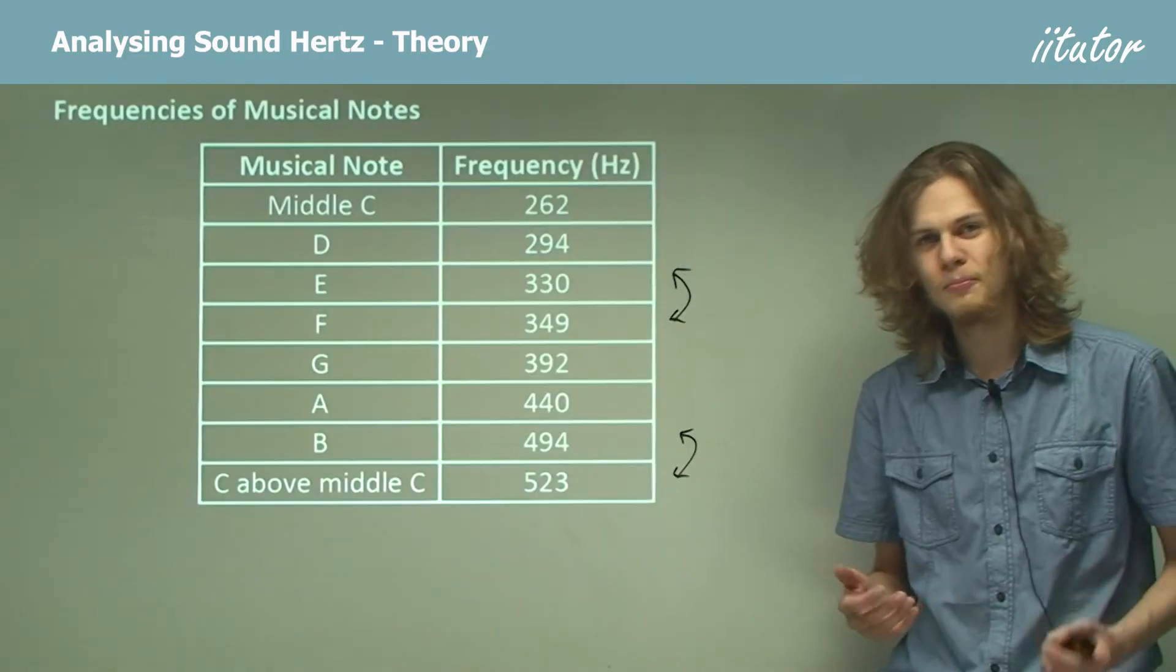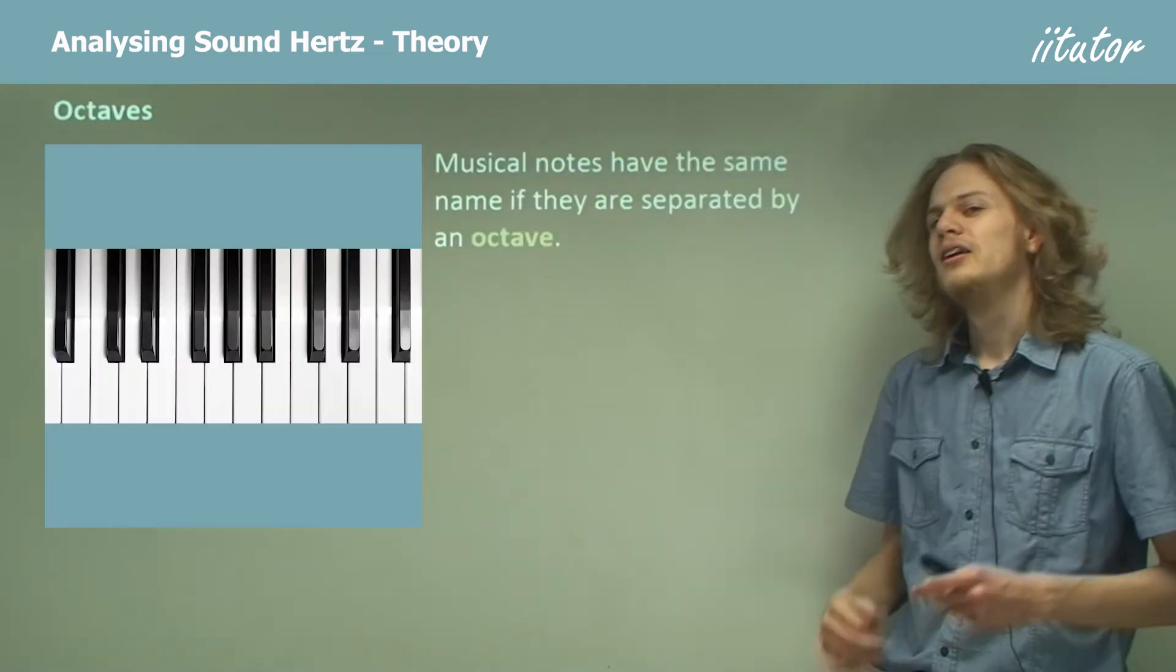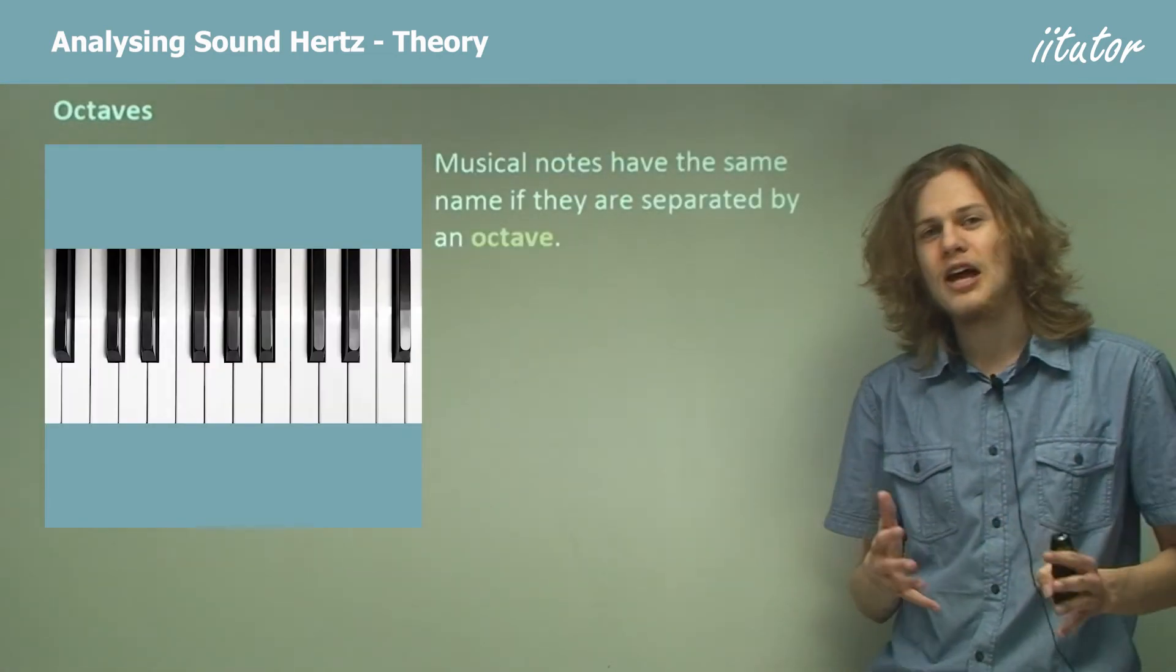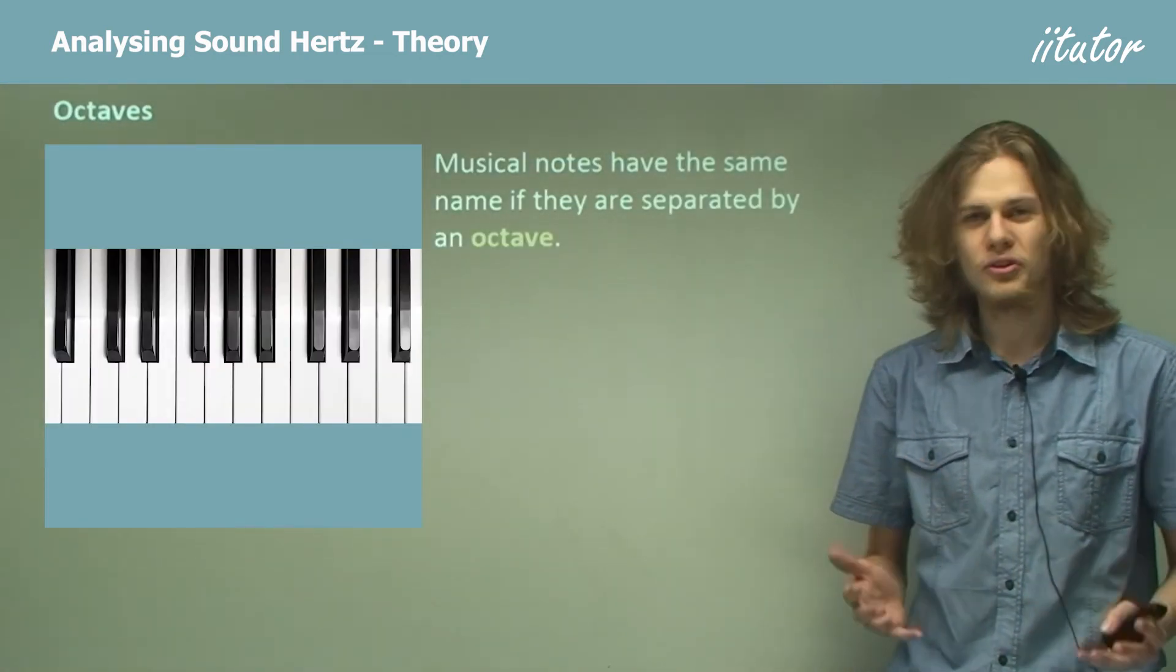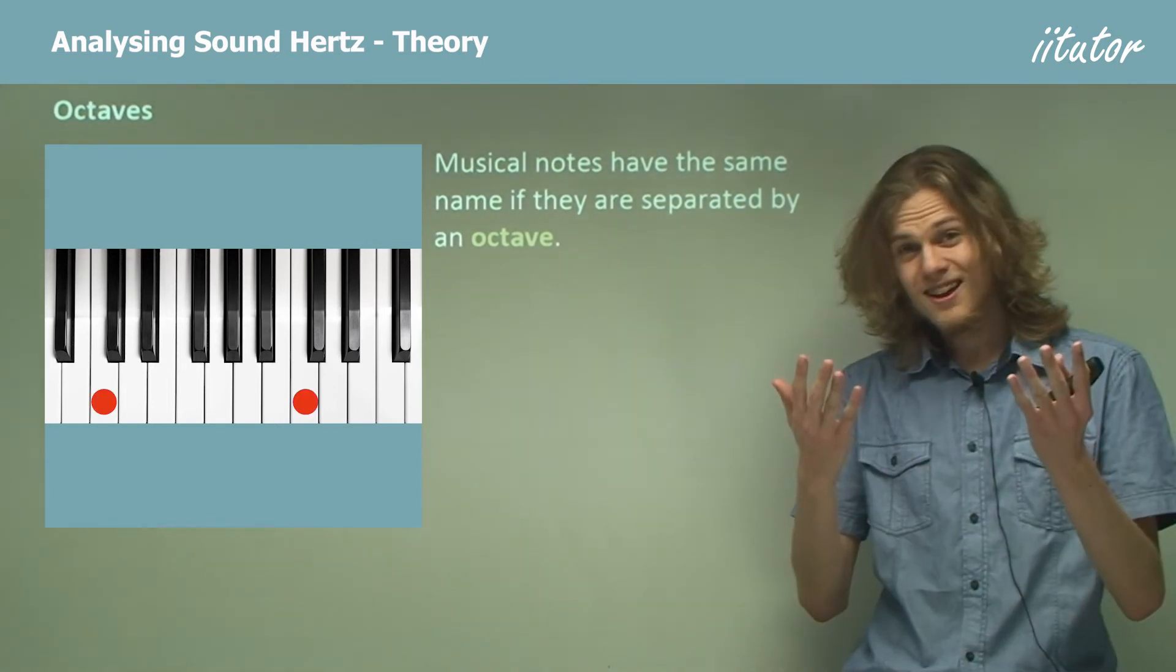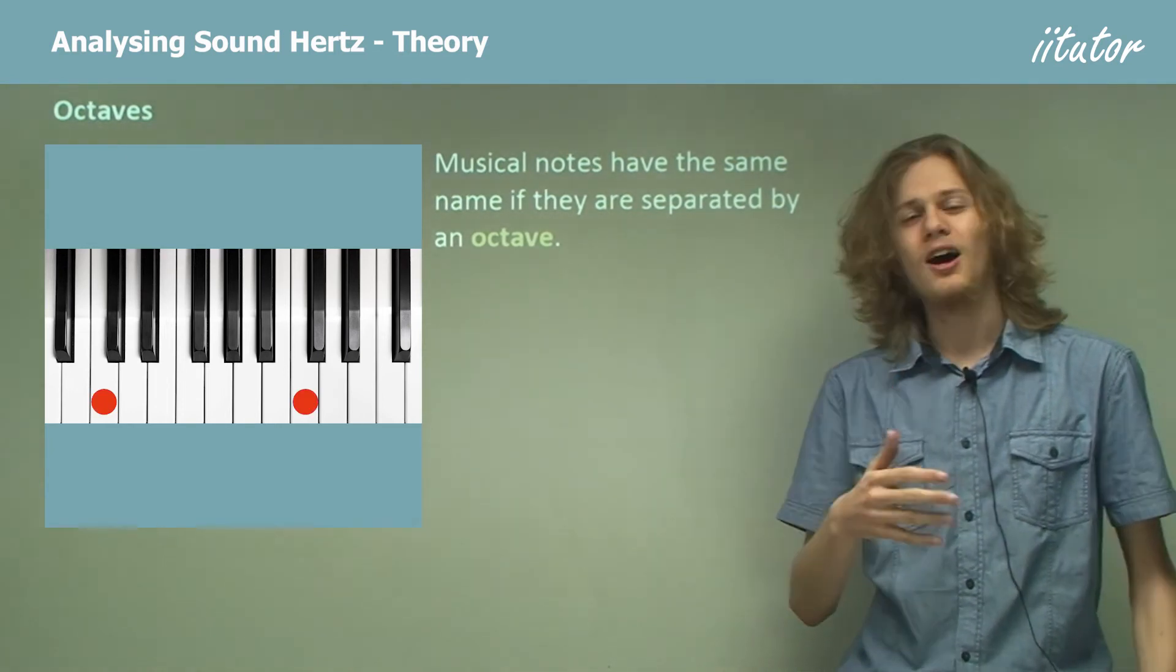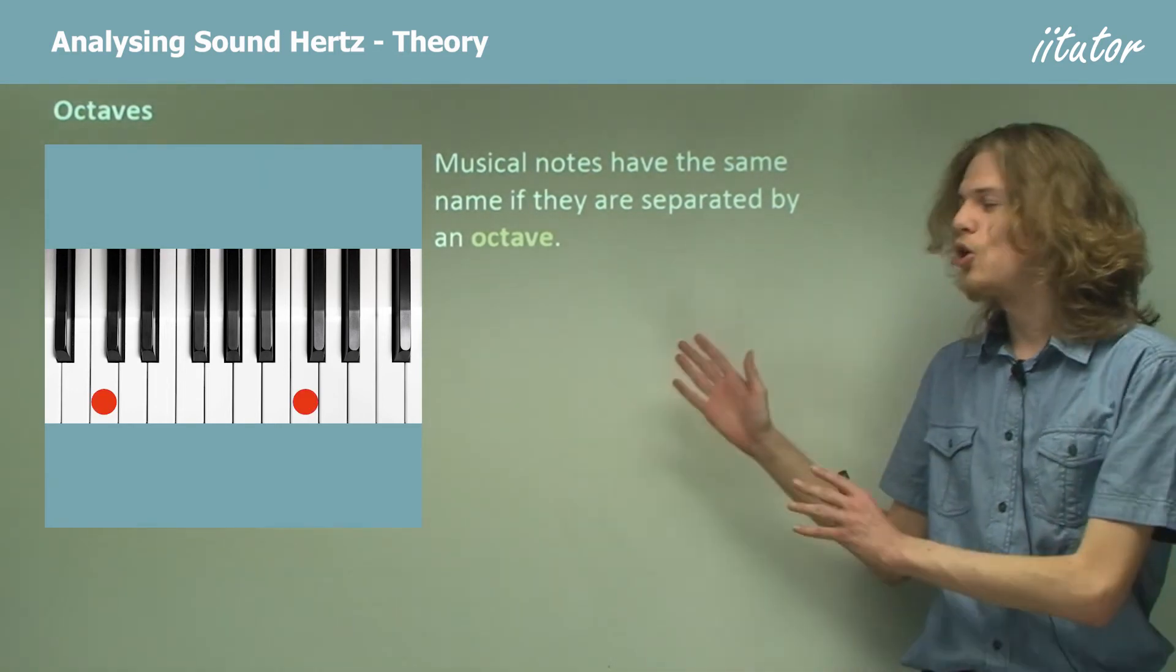Musical notes can have the same name if they are separated by an octave. So an octave is an interval. If we're musicians, then we'll know that the same notes are one octave apart.